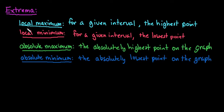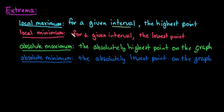A local maximum is a point for any given interval — it's the highest point for that interval. It's not the highest point on the entire graph; it's just the highest point for that given interval. A local minimum occurs if, on any given interval, it is the very lowest point of that interval. Again, it's not your absolutely lowest point on the graph — it's just for a small interval inside of there.